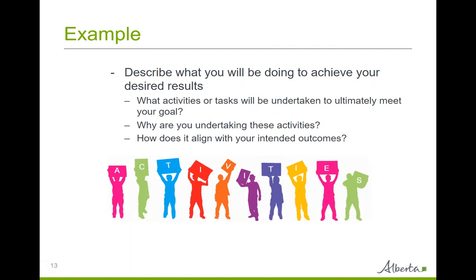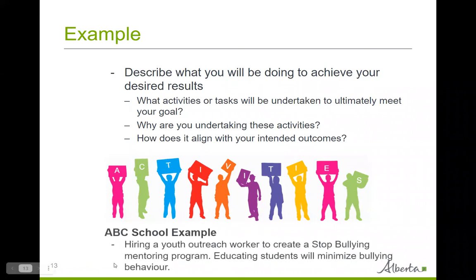In the grant proposal application, you will also want to describe the various project activities that will take place. You will need to demonstrate how these activities will help you achieve your desired results or outcomes. You will want to describe the activities or tasks that will be carried out to ultimately meet your goals, the reasons why you're carrying out these activities, and how the activities align with your intended outcomes. An example of activities that ABC school can do is hiring a youth outreach worker to create a stop bullying mentoring program, with the rationale that educating students will minimize bullying behavior.